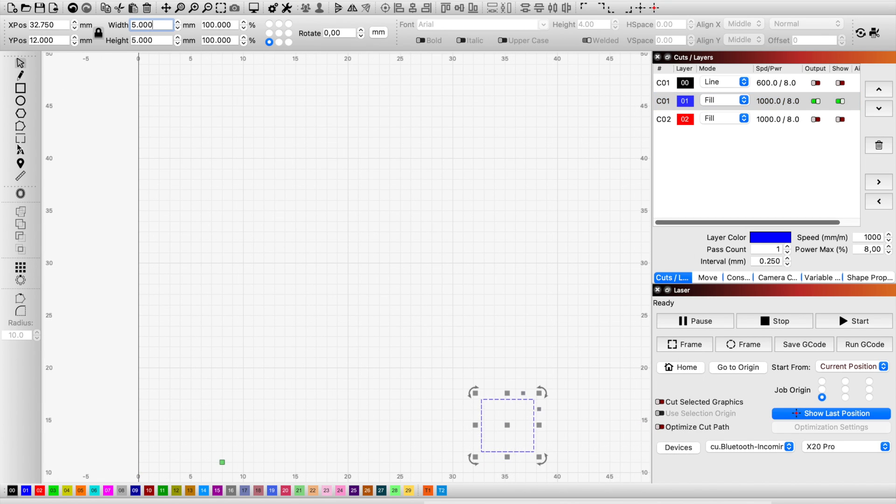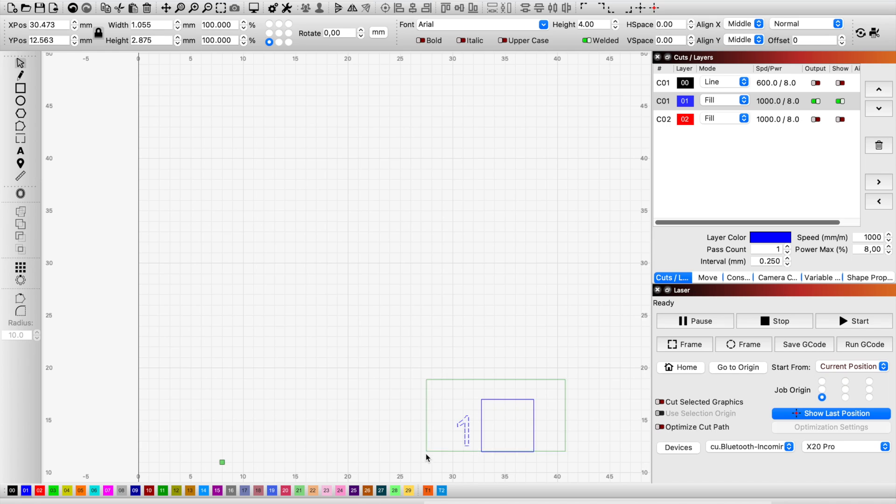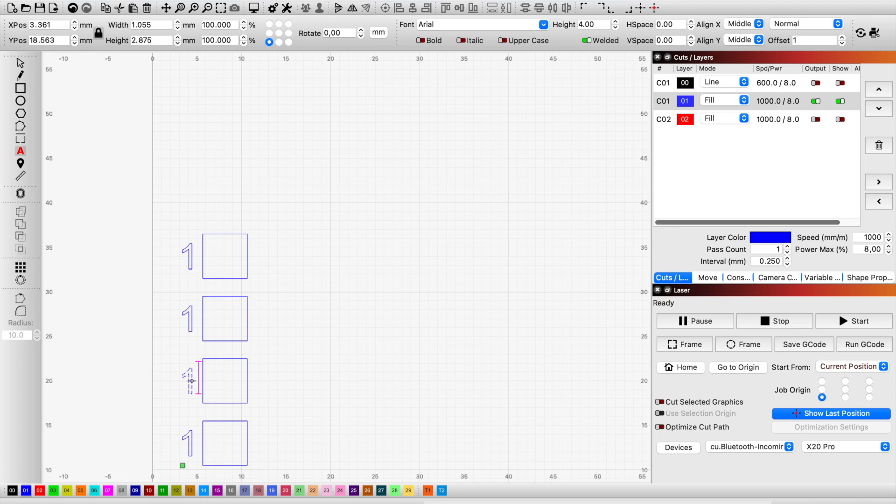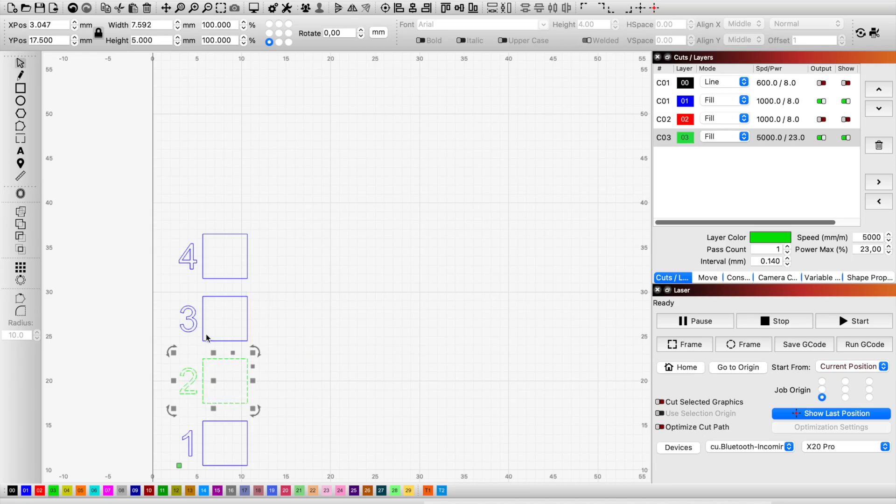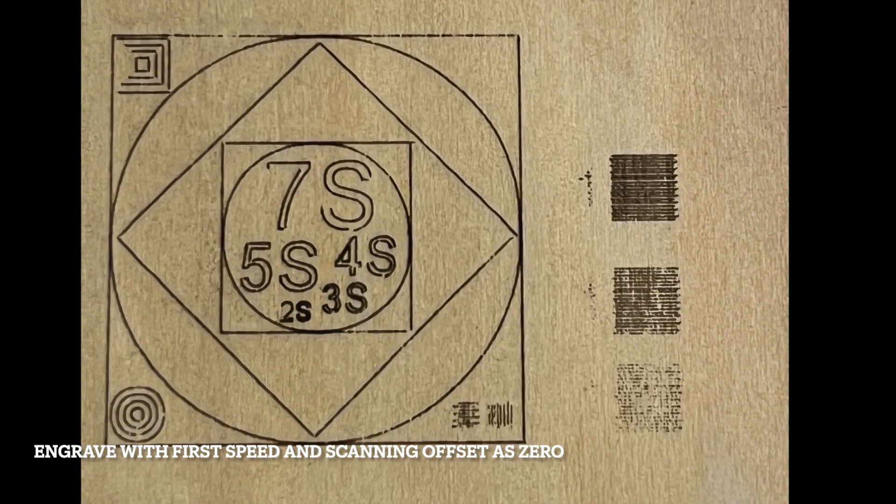I changed the size of the test square to 5x5 millimeter and made four copies, hoping that before four trials I will be able to find the right offset value for 1000 millimeter per minute. I only keep the first one enabled and disabled the rest three.